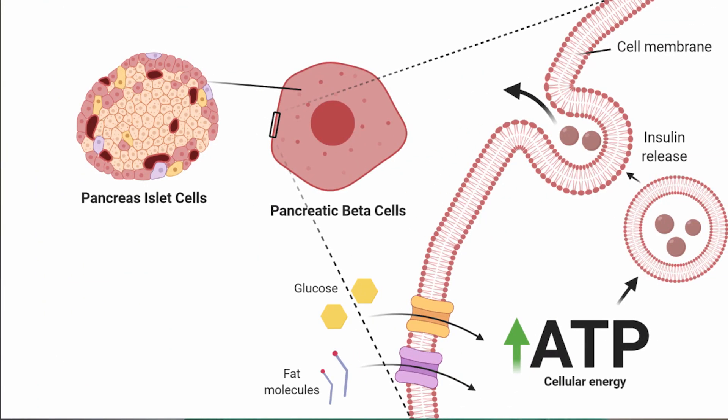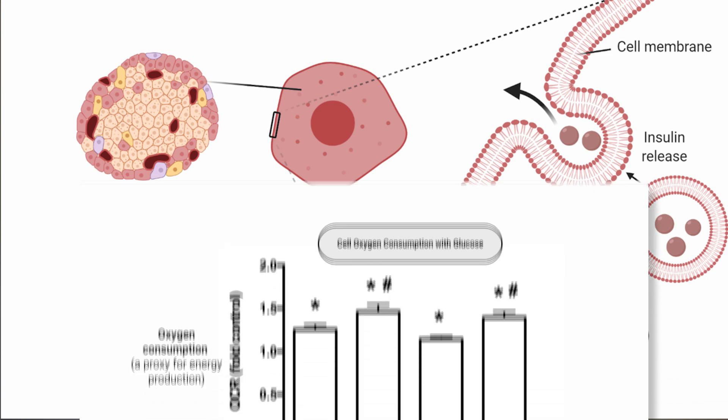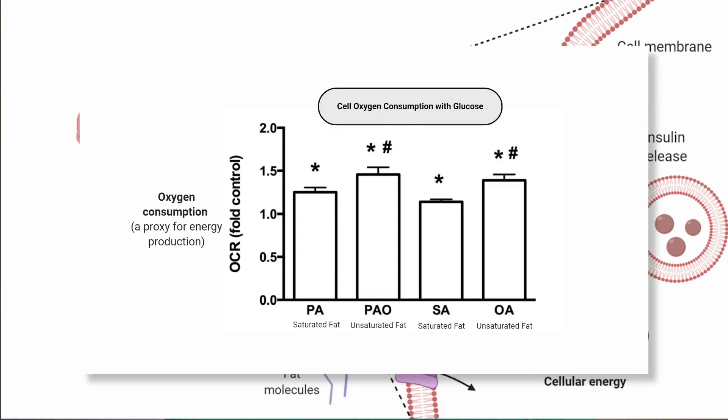But another question is: how? One of the mechanisms by which insulin is released is through an energetic-mediated pathway — meaning if cellular energy rises, it leads to a cascade of events that allow insulin to be released. To probe this, the researchers tested the oxygen consumption of the cells, which is a measure of mitochondrial energy production, because mitochondria need oxygen to generate energy.